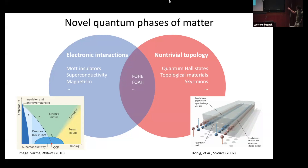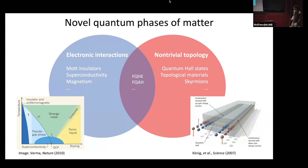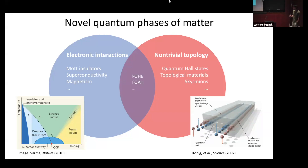Likewise, topological phases of matter, although they came to the fore relatively recently, actually date back quite a long time. One of the best-known examples is when you have a two-dimensional electron gas and apply a magnetic field to reach the quantum Hall regime. There has also been material progress identifying materials that intrinsically have some topological invariant, and people have been observing new phases of matter up to very recently.